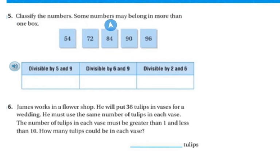Number 5 is to classify the numbers. Some numbers may belong in more than one box. 54, we know it's not divisible by 5 because it doesn't end in 5 or 0, but it is divisible by 6 and 9, and also by 2 and 6. Now, I'm going to do this 5 and 9 one first. These are not divisible by 5, so they cannot go there. But 90 is divisible by both 5 and 9, so that's the only one going in there.